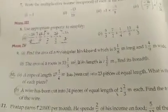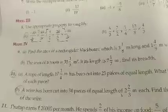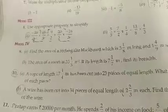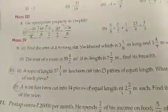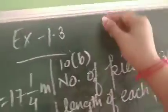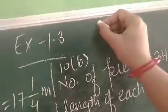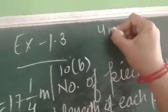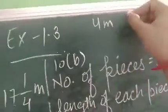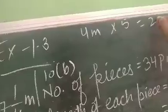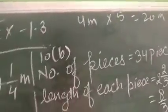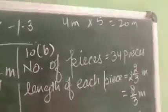In the last question, the number of pieces and total length were given. Now, the number of pieces and the length of each piece are given. For example, if one piece is 4 meters and we have 5 pieces, the total length is 20 meters. Same, we will do here.